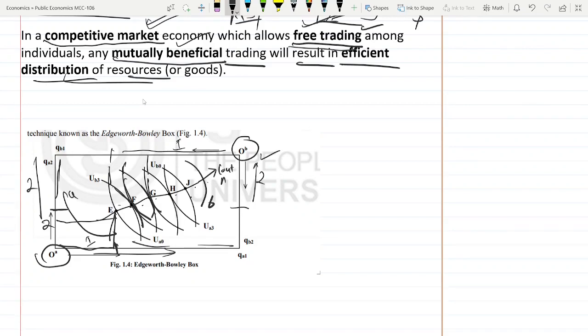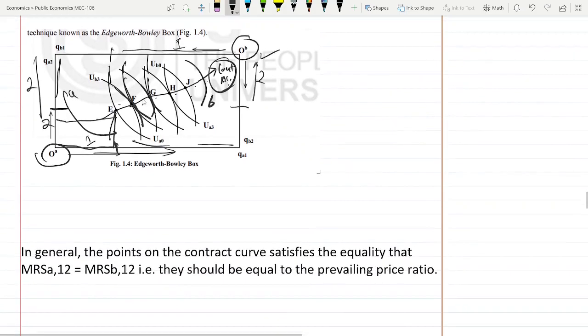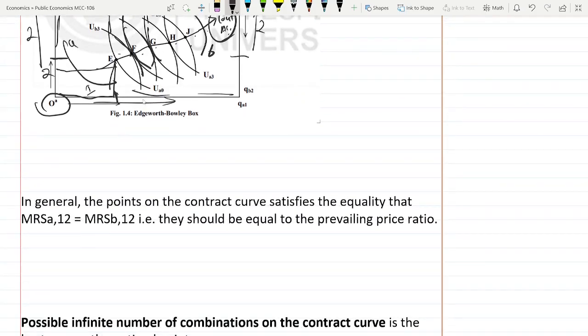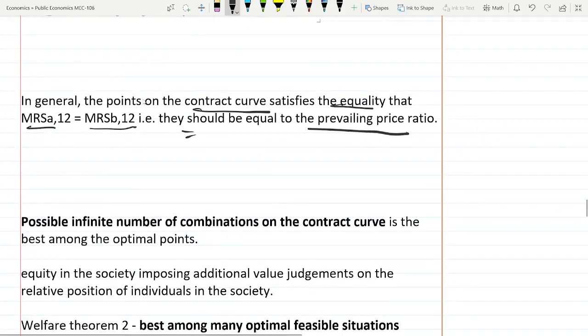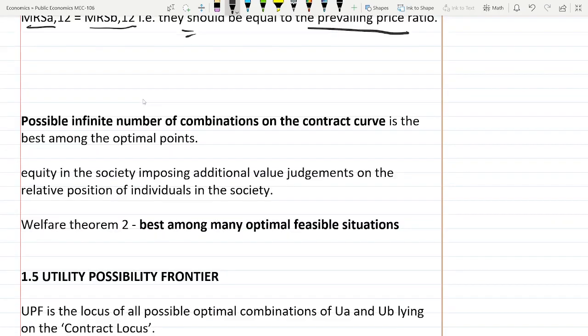On this contract curve, all Pareto optimal points are lying. Pareto optimal means there is no further Pareto efficient move we can make because they are on the tangent and they are getting the maximum utility as their indifference curves are tangent to each other. On all these Pareto optimal points, the contract curve satisfies the equality: the marginal rate of substitution for A for the good one two is equal to marginal rate of substitution of B for the good one two, and this is equal to the price ratio of the good one and two in the market. But there comes a problem because on the contract curve there are infinite numbers of Pareto optimal points.